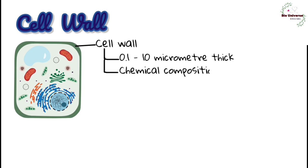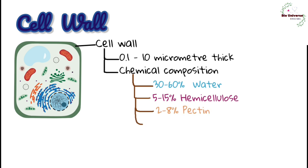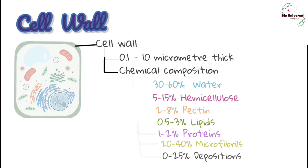Chemical composition of cell wall are 30-60% of water, 5-15% of hemicellulose, 2-8% pectin substances, 0.5-3% lipids, 1-2% proteins, 20-40% myofibrils and 0-25% depositions.